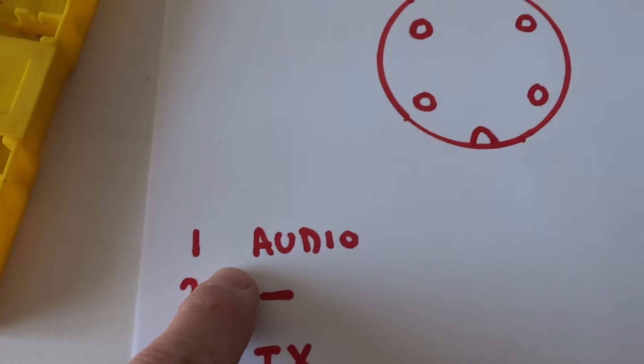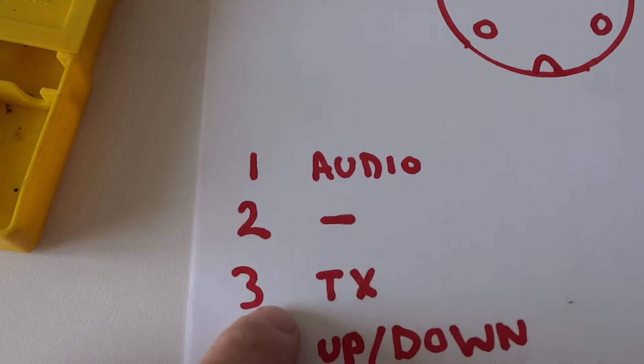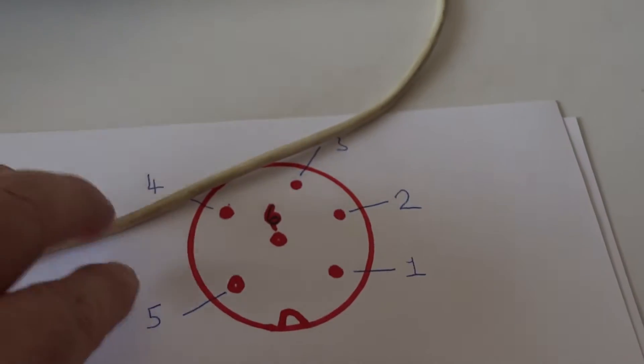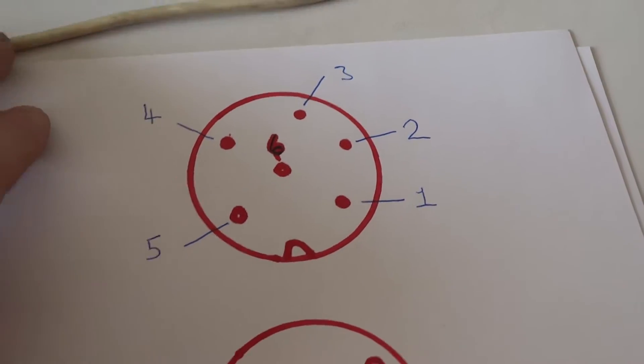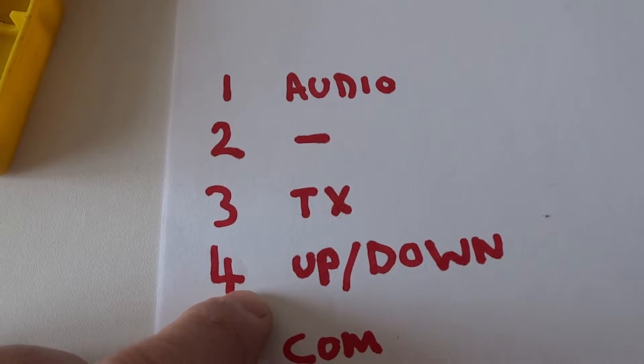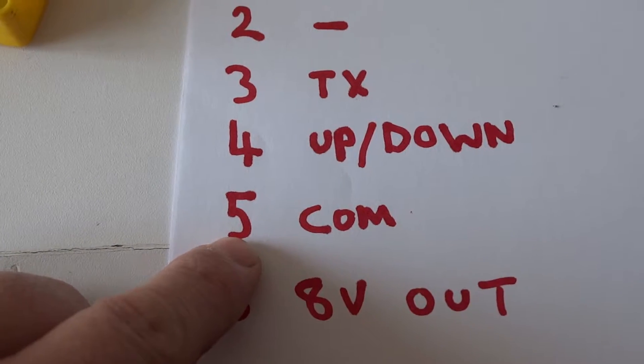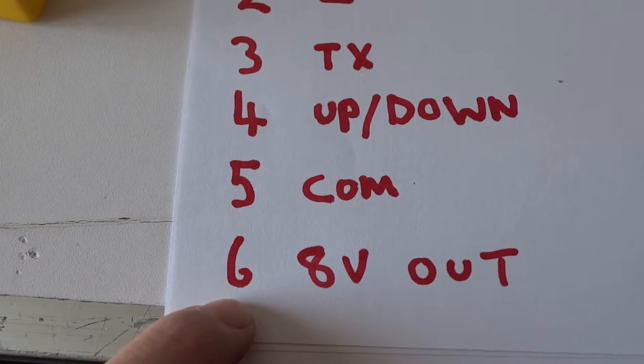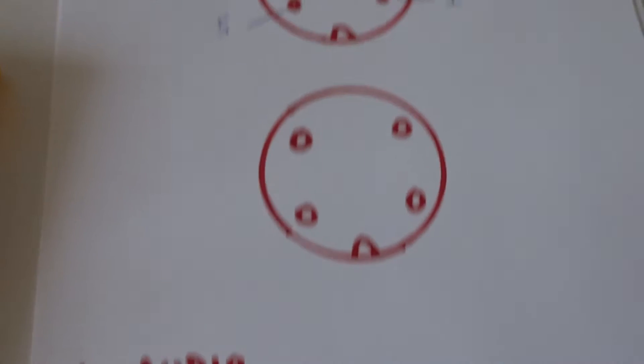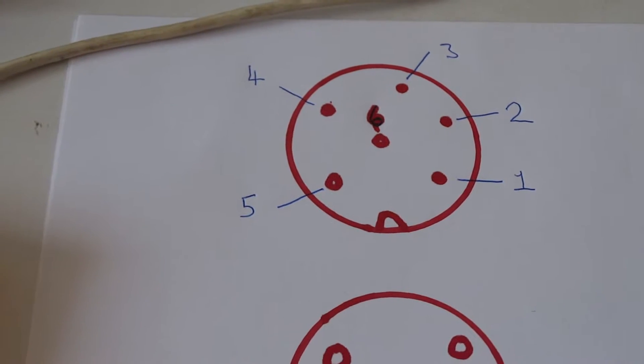Now what I'd like you to do is have a look at this diagram. Just remember this is from this side of the plug. Pin one is audio, pin two is not used, pin three is TX, pin four is up and down but we won't be using that one, pin five is common, and pin six is the 8 volt out.